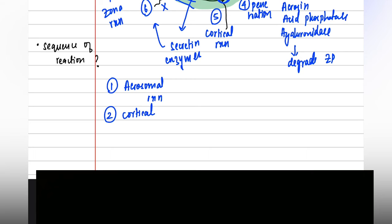The cortical granules contain enzymes and secretin, which are responsible for the third reaction — the zona reaction. In the zona reaction, except for the site of penetration, all other sites become impervious and impenetrable to other sperms, thereby preventing polyspermy.